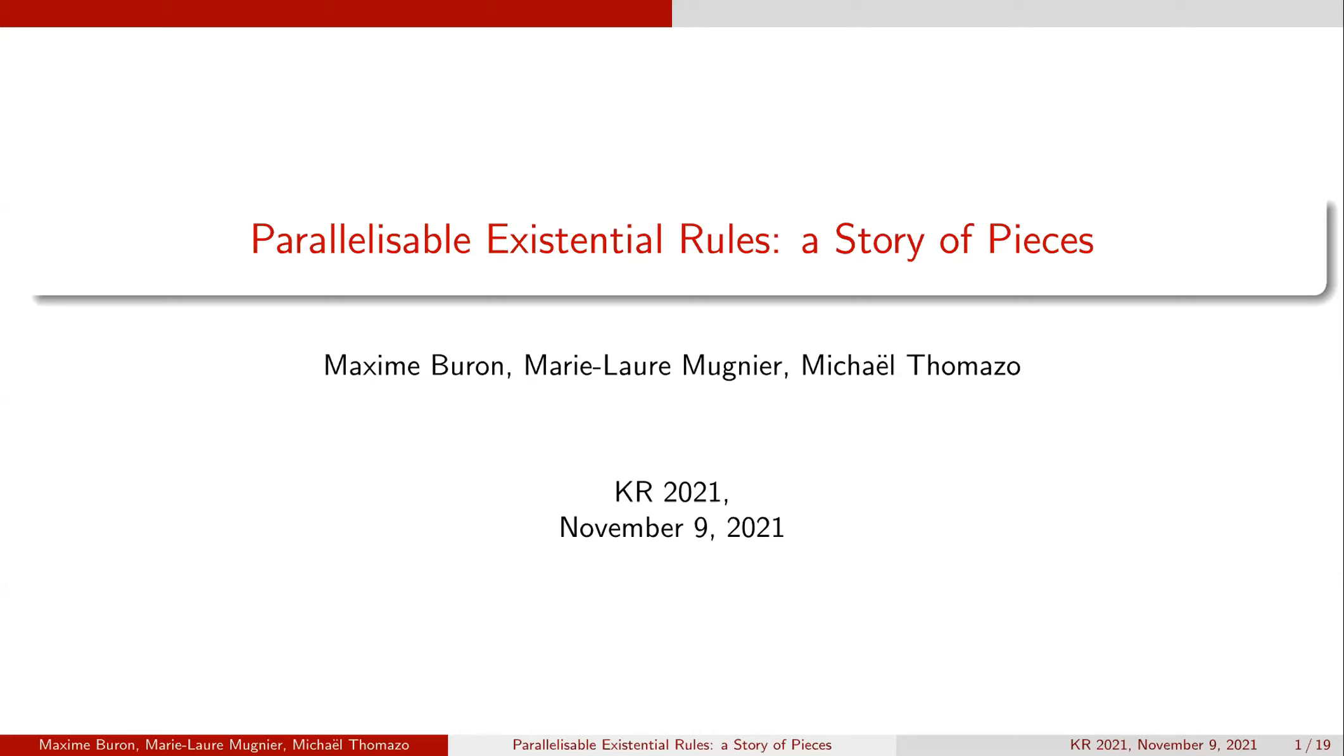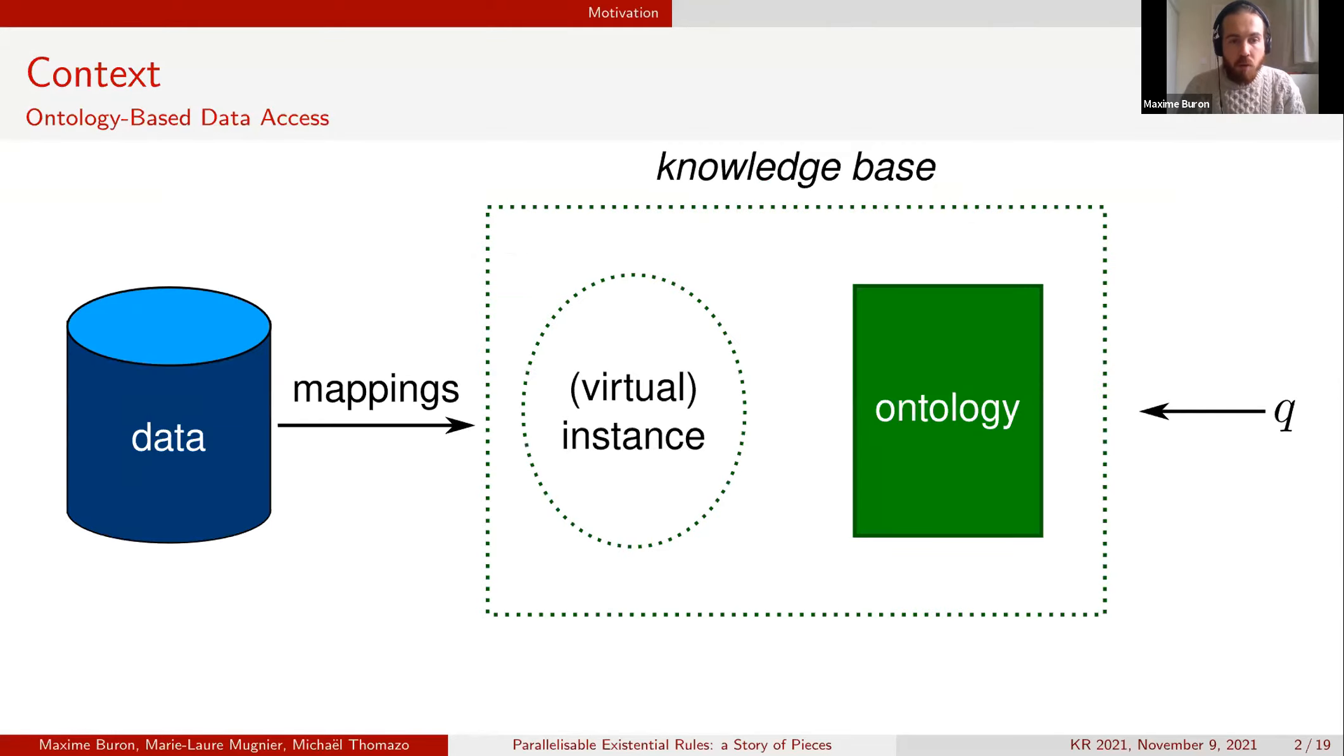This work is a joint work with Marie-Laure Meunier and Michael Tommaso. It takes place in the context of ontology-based data access where we have three levels: the data level, the ontology, and in between the mappings. What we want to do is to answer a query on the knowledge base.